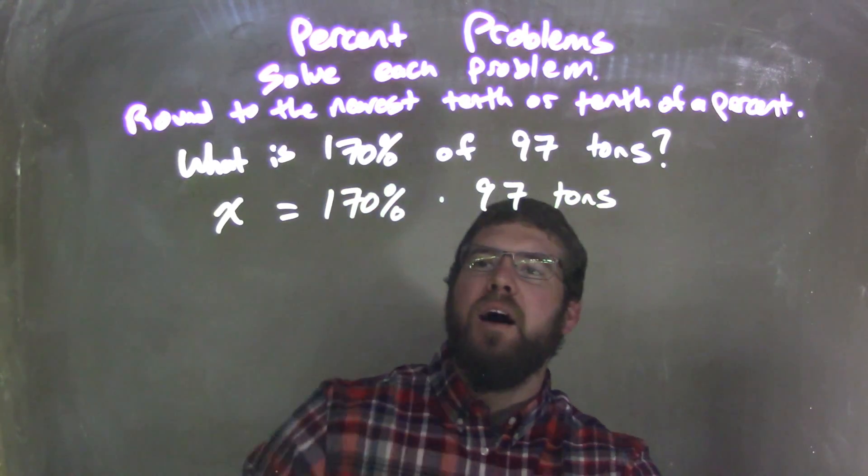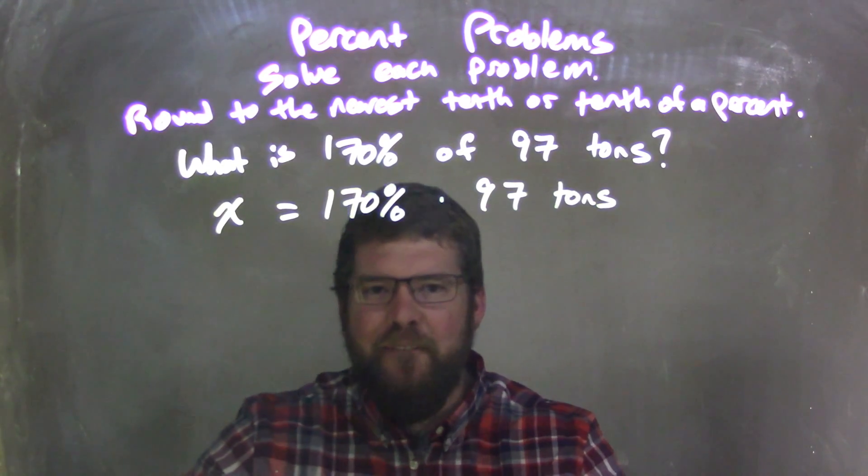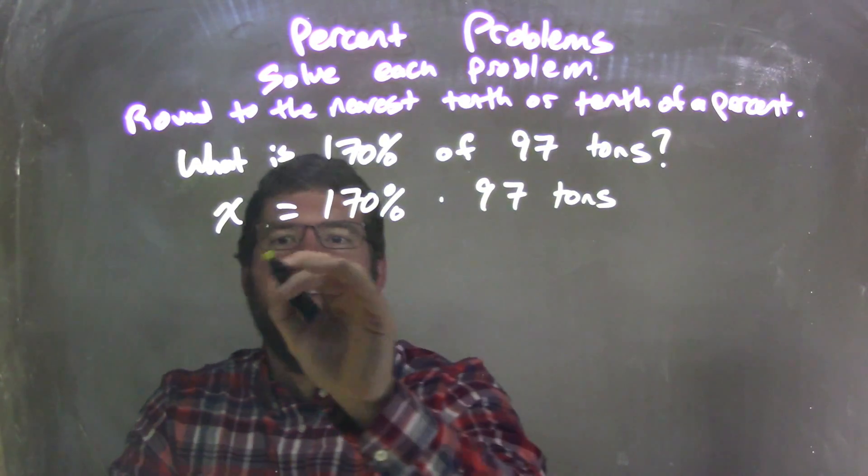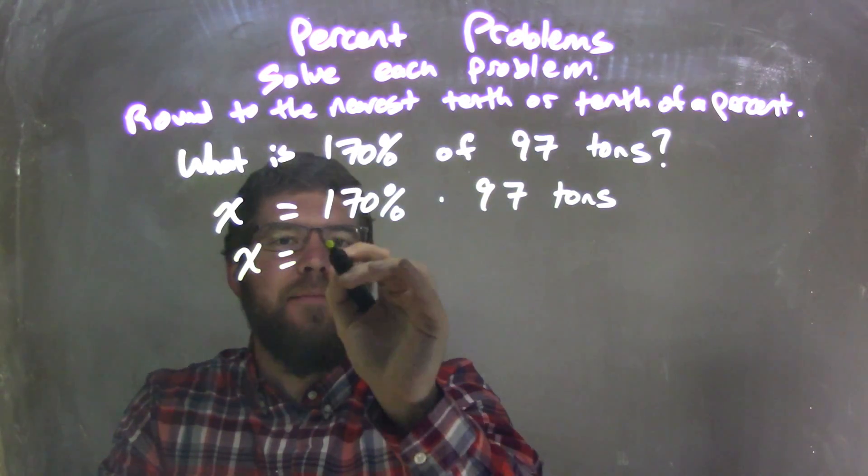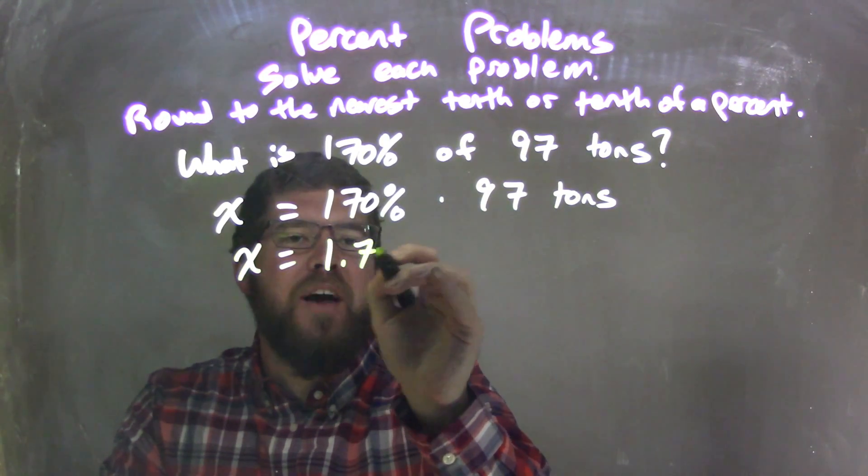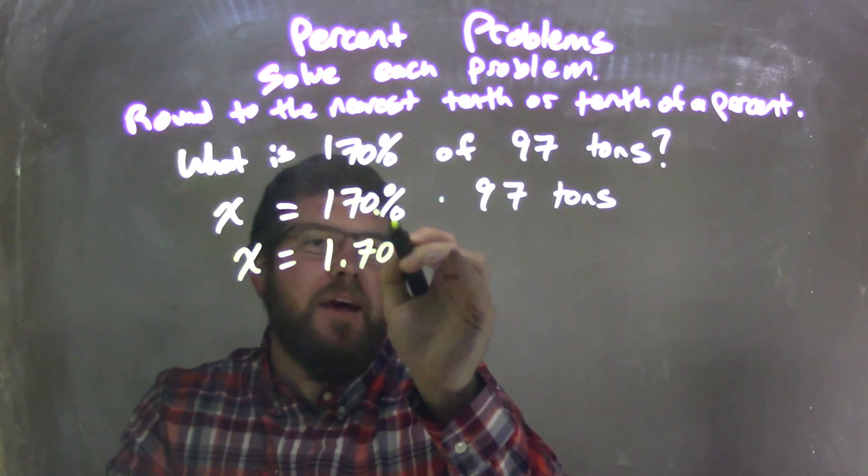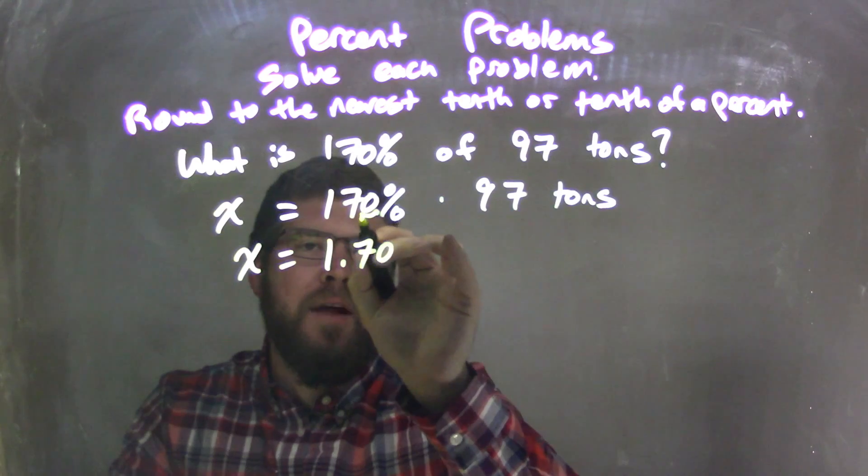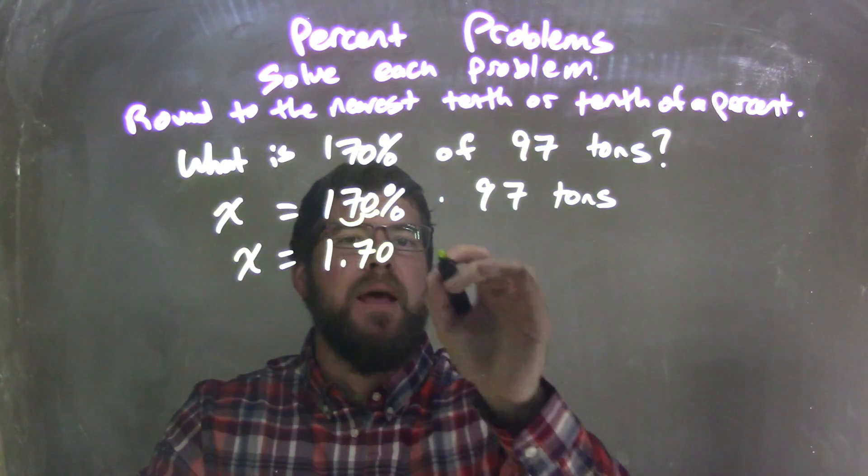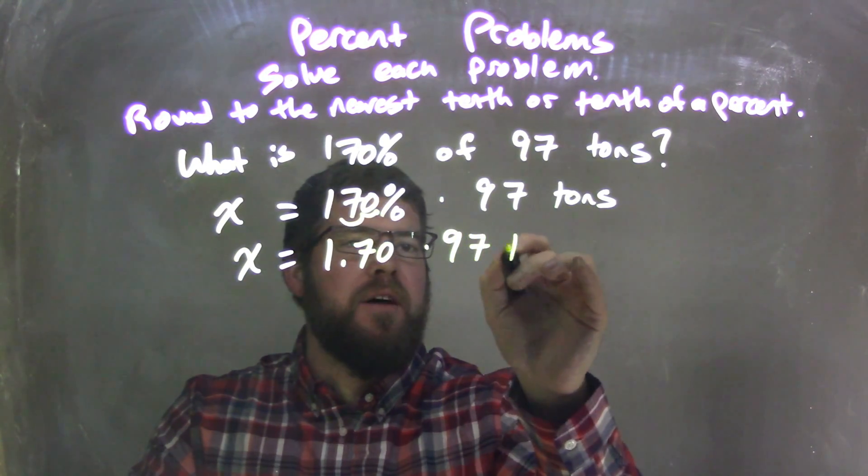Okay, well that 170%, I need to convert that to a decimal. Okay, so X is, 170% is 1.70. Remember that the decimal is right there, right? We move that two units to the left, we have 1.70 times 97 tons.